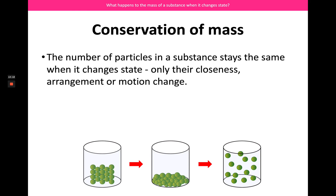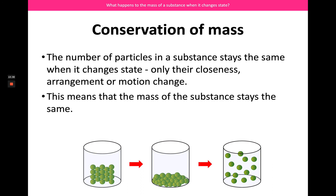Changing state does not change the number of particles — the number of particles always stays the same. It's only how close they are to each other, how they're arranged, and how their motion is — those are the only things that change. That means the total mass, which is a measure of how much stuff there is, stays the same. We call that the conservation of mass — a very important thing to realize from the particle model regarding changes of state. That's the end of our third video. We've just got one more to do, which is going to consider the pressure of gases.